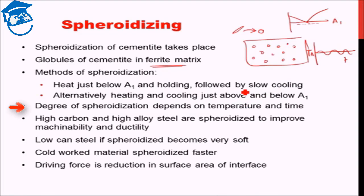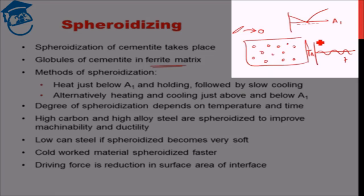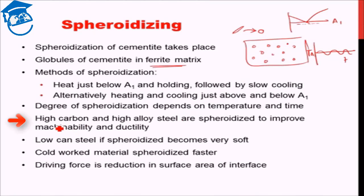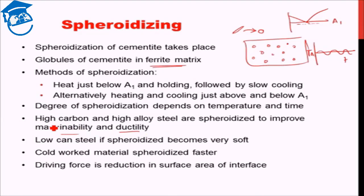The degree of spheroidization that will take place depends on the temperature provided as well as the duration. If we provide sufficient temperature but very short time, maybe only 30 percent of the cementite converts to spherical particles. If sufficient time is provided, all the elongated cementite converts to spherical cementite particles. Normally high carbon and high alloy steels are spheroidized to provide sufficient machinability and ductility, because these high carbon materials will have a lot of cementite particles, and if all are elongated with stress concentrations they will not have good ductility and machinability.